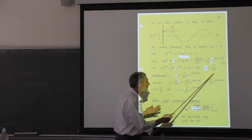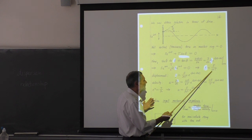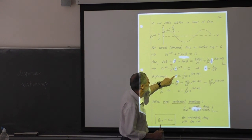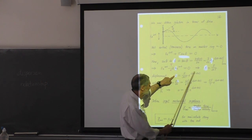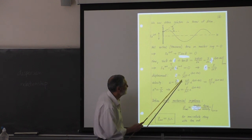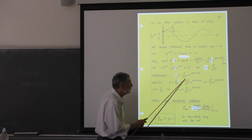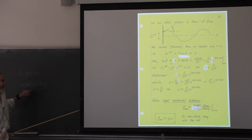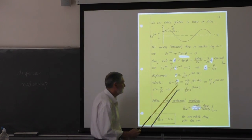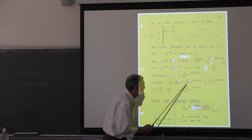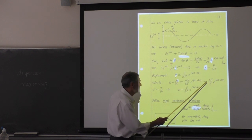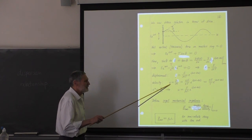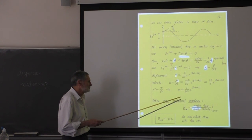So we get a unique solution for the steady-state motion. The displacement is A times e to the i(omega t minus kx). The velocity is the time derivative, which brings down i omega. The i's cancel and we get omega times A times e to the i(omega t minus kx). Using omega equals ck, the k's cancel and we just get c times A times e to the i(omega t minus kx) for the velocity.